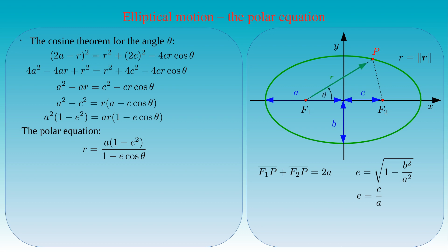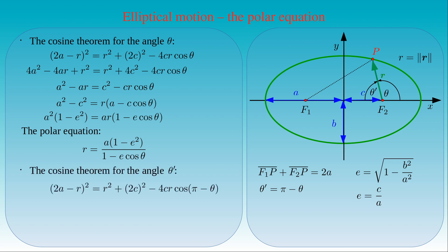If we measure the distance of the point P from the focal point F2, the angle theta prime we use in the cosine theorem is measured at the corner F1, F2, P, and it is equal to 180 degrees minus theta, or pi minus theta measured in radians. Then we can write that the square of 2A minus R is equal to R squared, plus the square of 2 times C, minus 4C times R times the cosine of pi minus theta.